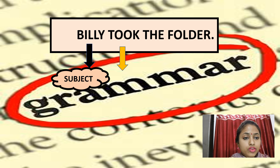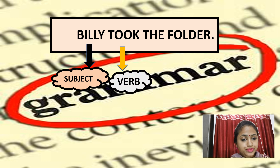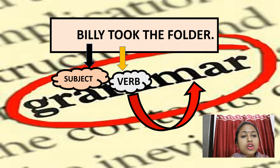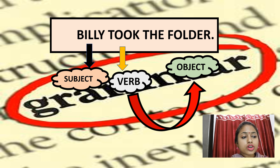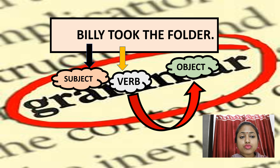You can clearly see the verb in the sentence — the verb is 'took.' Now along with the verb, whatever work the subject has done becomes the object. If I ask: Billy took what? What work has Billy done? Billy took the folder, so 'the folder' is the object. So remember, to frame a sentence it is very necessary to have a subject and a verb. Now you know what is a subject and what is a verb.